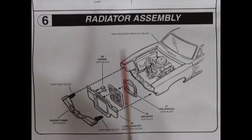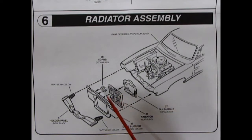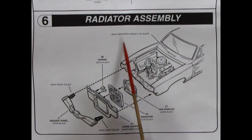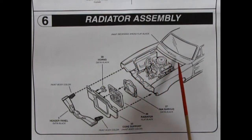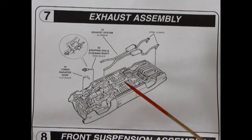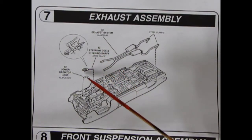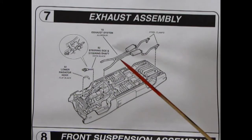Panel six shows our radiator assembly and as you can see here it's a multi-piece affair with the horns. So we've got a fan shroud, our radiator, the two horns, the core support and the header panel up here. So that's a lot of stuff and it even says paint the recessed area up there flat black. Panel seven shows our exhaust assembly dropping in to our chassis here. You also get the steering box with the steering shaft, the lower radiator hose and these you paint aluminum with steel clamps.